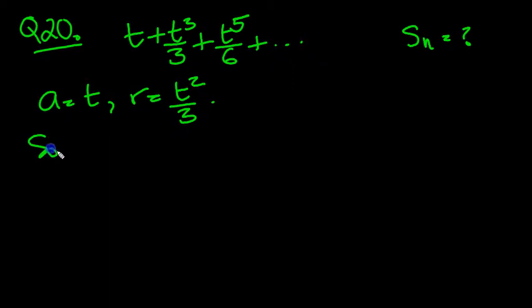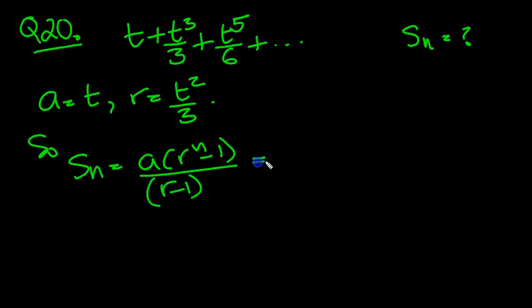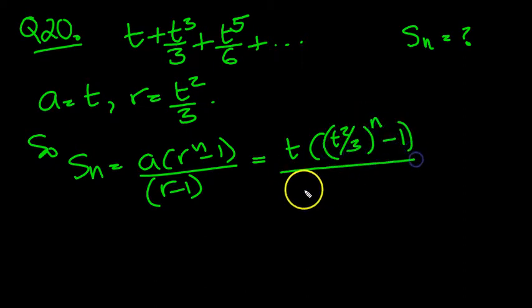So the sum of the first n terms is a times r to the n minus 1, all over r minus 1, which equals: a is t, r is t squared over 3 to the power n minus 1, all divided by t squared over 3 minus 1.